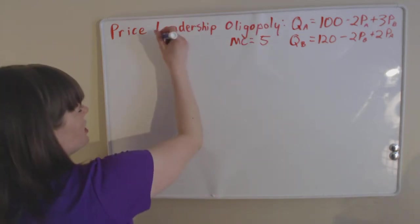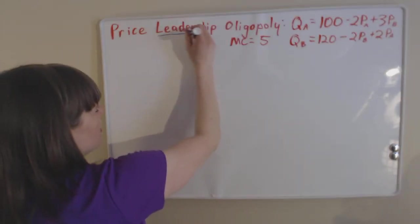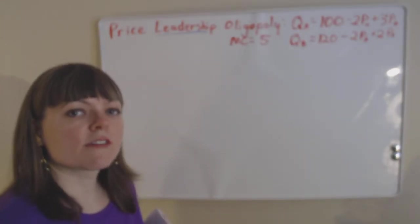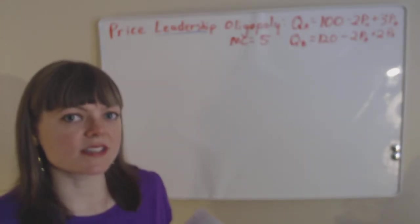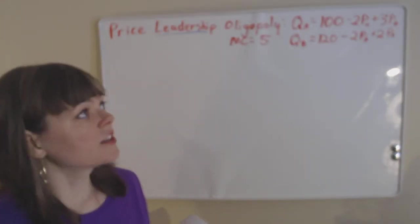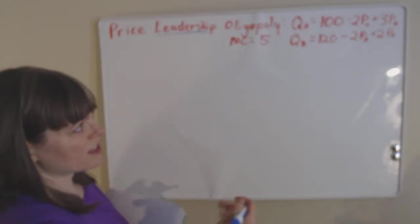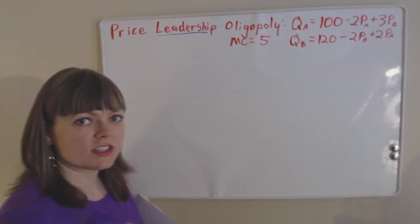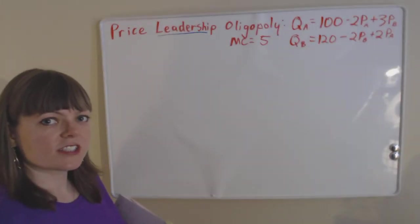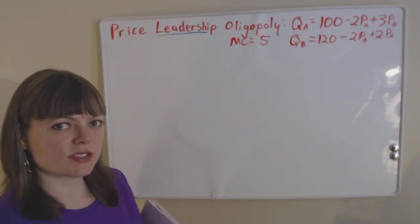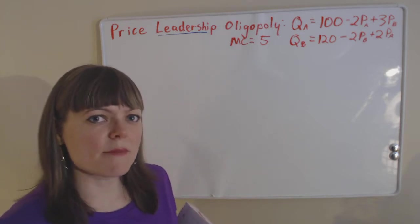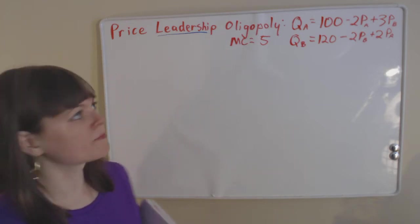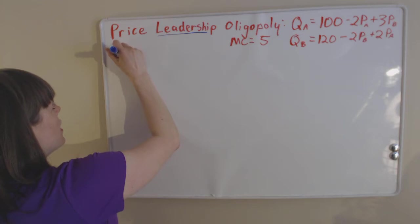Anytime we hear 'leadership,' we're thinking this is a sequential moves game, so this is going to involve backwards induction. When we approach this, we're actually going to solve firm B's maximization problem first, then get a best response function and plug that back into firm A's problem. So let's set this up.